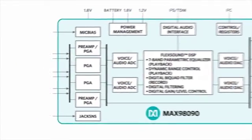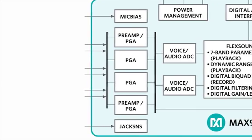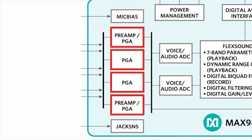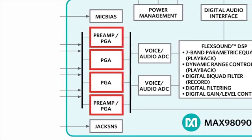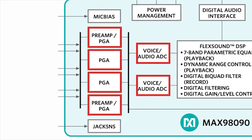Six flexible inputs can accept up to three differential microphone signals, or can be configured as single-ended or differential line inputs. One input can be retasked to support two digital microphones. The analog inputs are amplified by up to 50 dB and recorded by the stereo ADC, supporting sample rates between 8 kHz and 96 kHz.